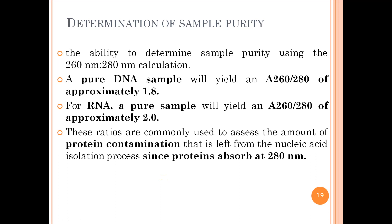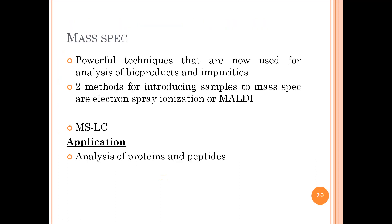Mass spectrometry systems can also be coupled with chromatography — as in LC-MS — for powerful quantitative analysis of proteins and peptides. In summary, UV spectrophotometry and mass spectrophotometry are both valuable tools for analyzing and confirming product purity.